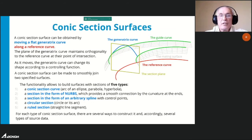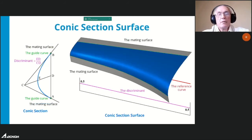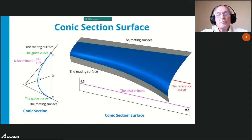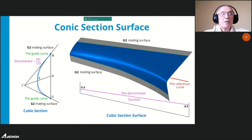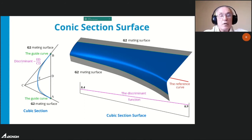For each type of conic section surface, there are several construction methods. The generative curve in the form of an algebraic curve of degree 2 begins on one guide curve and ends at another; direction at the ends is determined by two mating surfaces, and shape is determined by discriminant. The reference curve can be a line segment. A nerve-form generative curve provides smooth connection with mating surfaces at both ends, with the discriminant function determining the section shape.